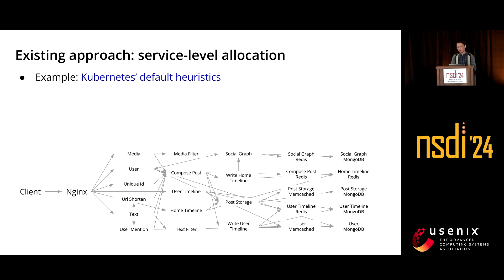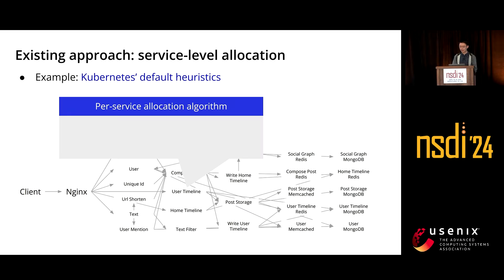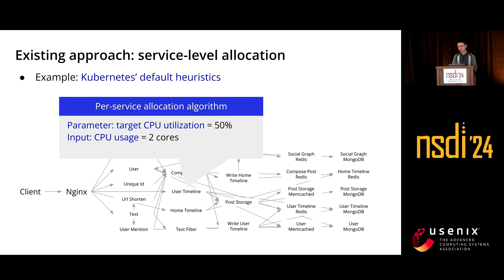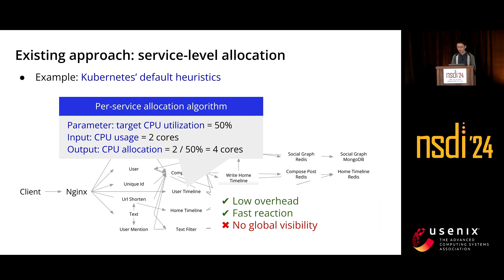An existing approach is to manage resource allocation at the service level. An example is Kubernetes default heuristics. It runs an allocation algorithm on each individual service, and you need to set a target CPU utilization parameter — say 50%. It observes the CPU usage; if the service is currently using two CPU cores, the allocation will be set to four cores to achieve the 50% target. This heuristic is simple with very low overhead and fast reaction. However, because the algorithm runs on each individual service, it can only see local data and does not have global visibility like RPS or end-to-end latencies.